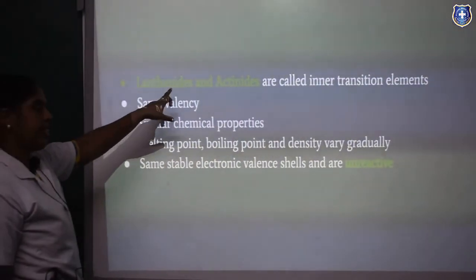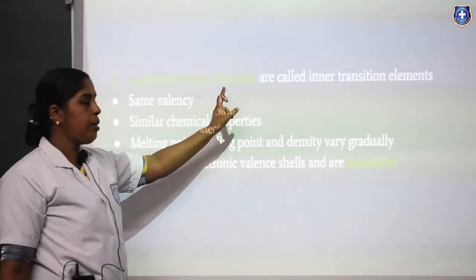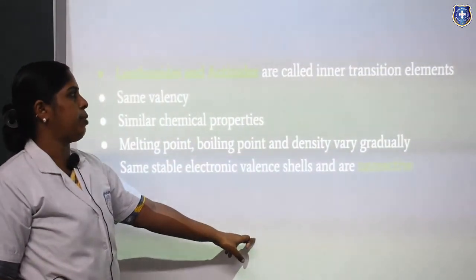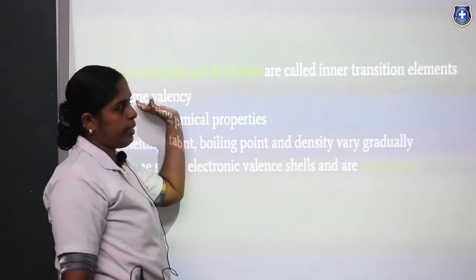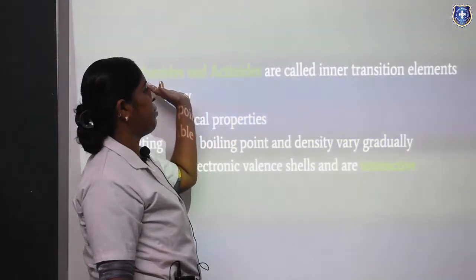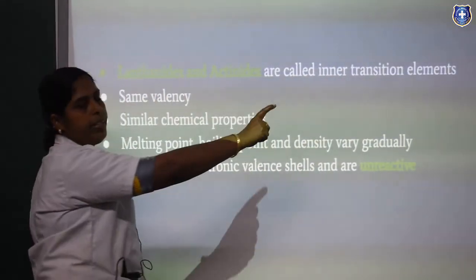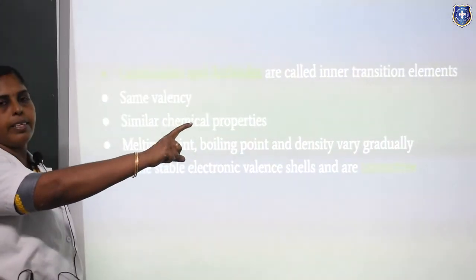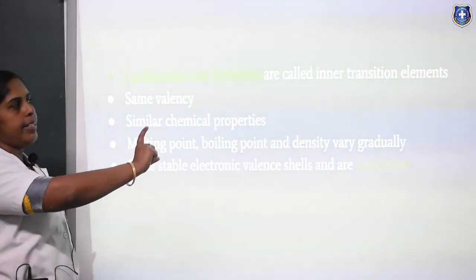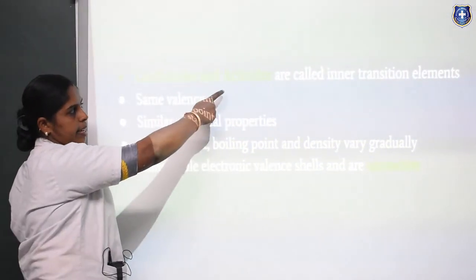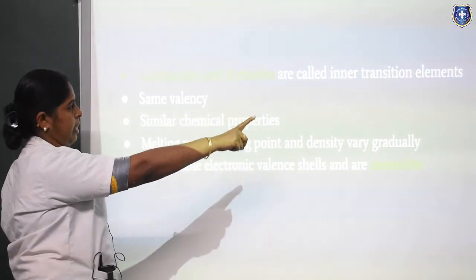Lanthanides and actinides are called inner transition elements. They are present at the bottom of the periodic table. They are called inner transition elements because they are placed within the transition metals region — groups 3 to 12 — and so lanthanides and actinides included inside that transition metals group are known as inner transition elements.